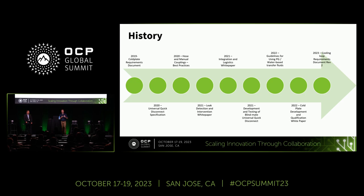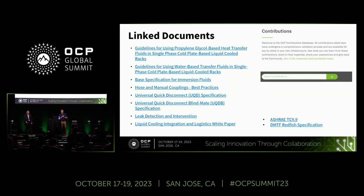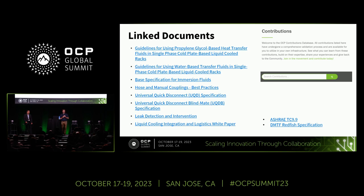This requirements document is intended to be a single source of truth and an index out to all of the other papers that may be of interest depending on the architecture of your system. Once this goes live, I've got a link to all of the different white papers referenced within this contribution. Almost all of them are available on the OCP contribution portal, except the ASHRAE TC 9.9 and the DMTF Redfish spec. We thought it was important to tie in not only the OCP requirements but also what else is happening in industry — hence the ASHRAE and Redfish.